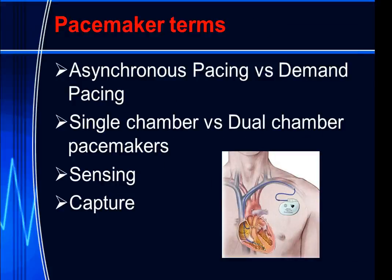There are pacemaker terms you need to understand. An asynchronous pacemaker delivers a stimulus to the heart at a set rate regardless of what the heart rate is. For example, if the pacemaker is set to 70 beats per minute and the person has a heart rate of 66 beats per minute, it will continue to pace at all times.